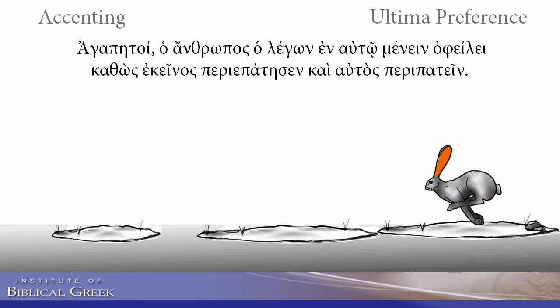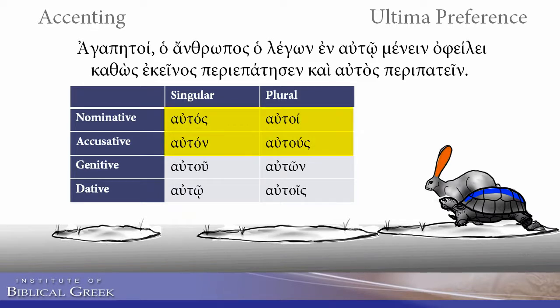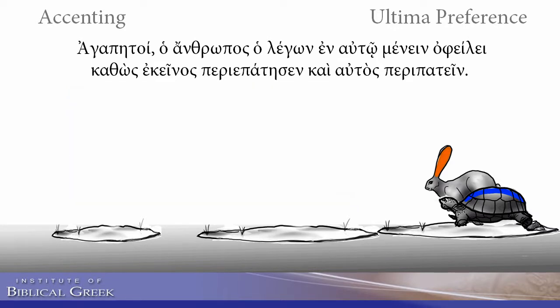Words born with an acute on the ultima are called oxytone. In the first and second declensions, these words will have acutes or graves — if they're followed by another word — on the nominative and accusative cases. Notice they're almost all short except for the accusative plural. For the genitive and dative forms, they'll have circumflexes. I call this the box pattern. So the primary cases — the upper box — will have acutes, and the lower box will have circumflexes. Words like adverbs that are born with circumflexes on their ultima won't ever change — they'll just keep that circumflex right there.